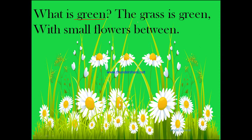What is green? The grass is green with small flowers in between. She asks about the color green, and what is green in color? Green grass. We have seen grass, and what do these grasses have? Small flowers in between them. See this picture — she is talking about the green grass which has small flowers in between.